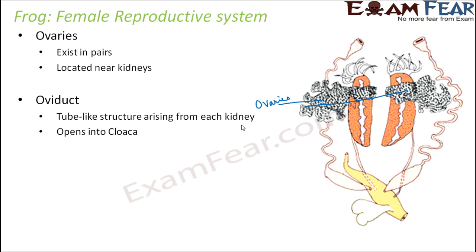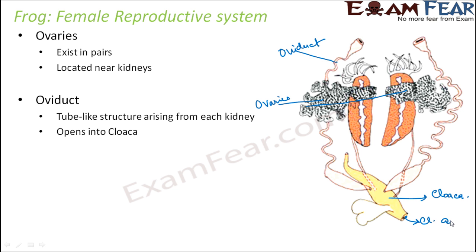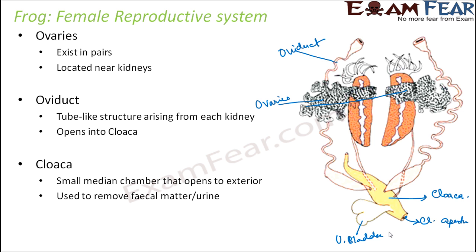The oviduct is a tube-like structure arising from each ovary that opens into the cloaca. In the diagram you can see the oviduct arising here, opening into the cloaca — that yellow structure is the cloaca, and this is the cloacal aperture. Here also the urinary bladder is visible. The cloaca is the small median chamber that opens to the exterior, used to remove fecal matter or urine.